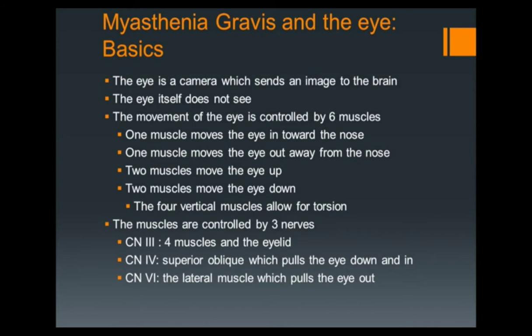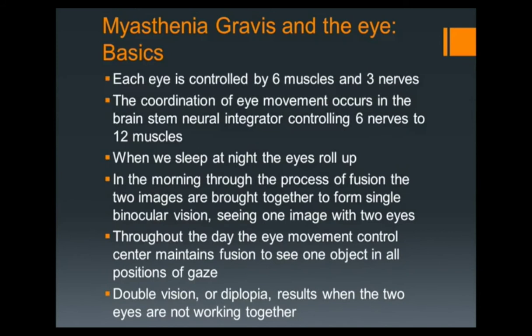So how does the eye work? The eye is a camera. It sends an image to the brain. The eye does not see — it doesn't do any integration at all, just the camera. All the integration comes up in the brain. The movement of the eye is controlled by six muscles: one out, one in, two up, two down — six muscles controlled by three nerves. One nerve goes to the muscle that pulls the eye out, one to the muscle that pulls the eye down and in, and one nerve goes to the other four muscles plus the eyelid. You have to coordinate that movement — it has to be extremely precise. We have this in each eye, so in the brain there has to be a computer controlling six nerves to 12 muscles to keep things straight all the time.